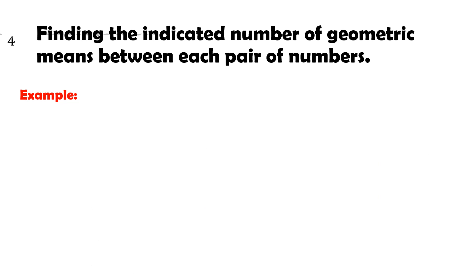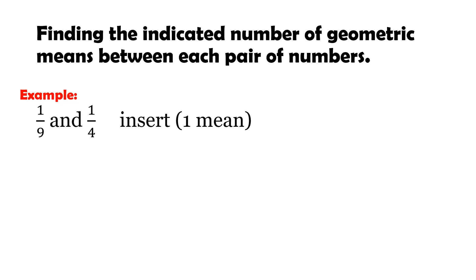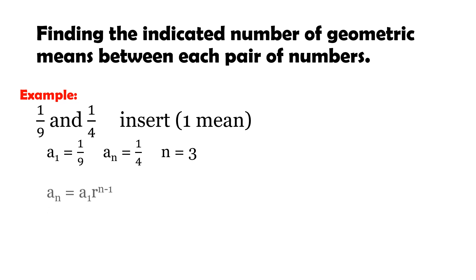Here is another example: given 1/9 and 1/4, we are going to insert 1 mean. With 1 mean, we have 3 terms in the sequence. From this information, the first term is 1/9, the last term is 1/4, and n = 3.